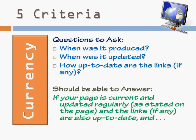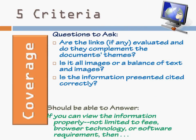The fourth criterion is all about a webpage's value — hence why we say currency. How much currency, how much value does this webpage have? When was it produced? When was it updated? And how up-to-date are the links? Those links direct you to sources of information, and if they are not up-to-date, then how can you verify that information? You want to make sure that the webpage has up-to-date information, because things change. If it's updated regularly, that should be stated on the homepage. Also, check that the links are working properly; if they're not, there's a chance they haven't been updated over a long period of time. If your page is current and is updated regularly, and the links are also up-to-date, then you've addressed the currency of the webpage.